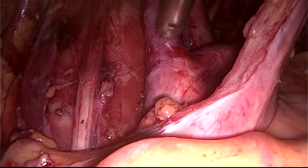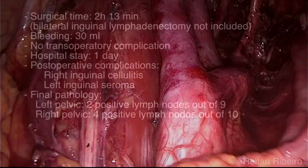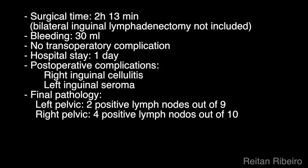Total surgical time with laparoscopy was 2 hours and 13 minutes. Bleeding was estimated at 30 cc with no intraoperative complications, and the patient was discharged the next morning. As postoperative complications, she presented right inguinal cellulitis and left inguinal seroma. Final pathology revealed 2 positive lymph nodes out of 9 on the left side and 4 positive lymph nodes out of 10 on the right side.